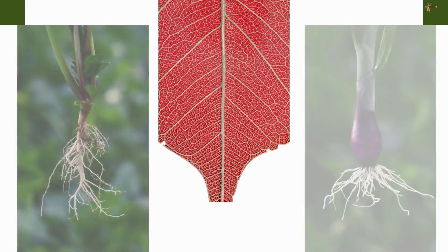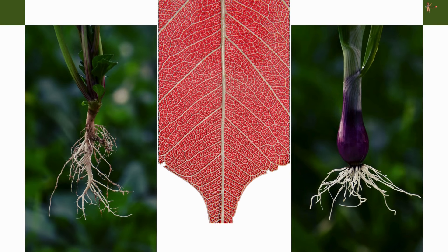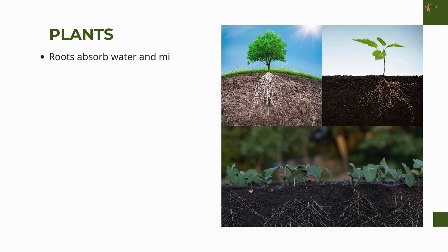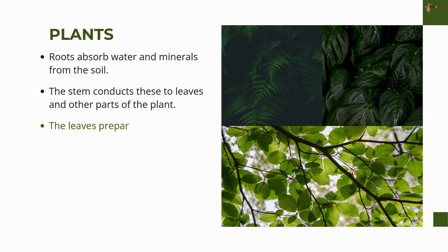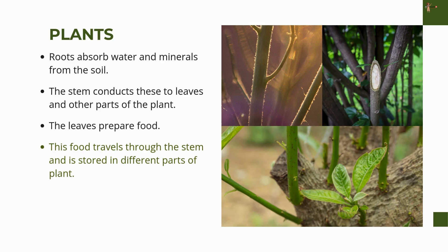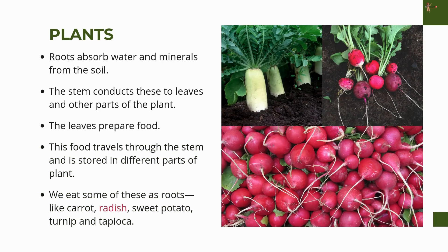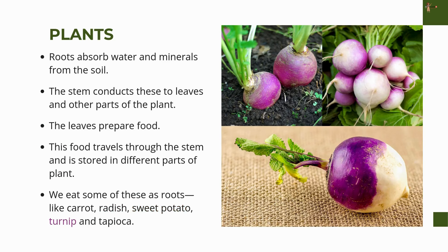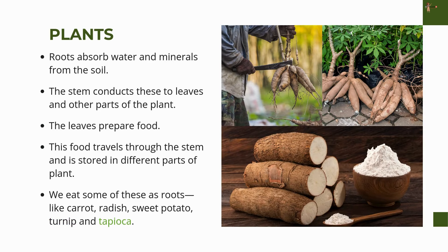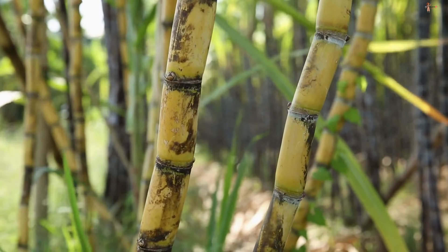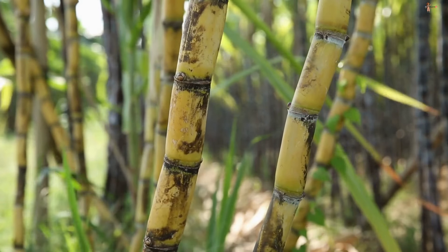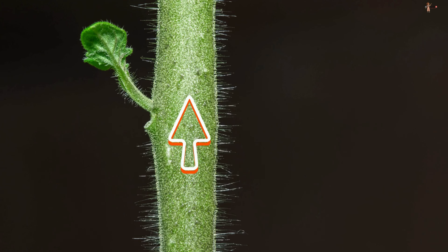Roots absorb water and minerals from the soil, and the stem conducts these to leaves and other parts of the plant. The leaves prepare food, which travels through the stem and is stored in different parts of the plant. We eat some of these as roots — like carrot, radish, sweet potato, turnip, and tapioca. Do you agree that the stem is like a street with two-way traffic? Comment below and write the name of the material that goes up in the stem and that which comes down.